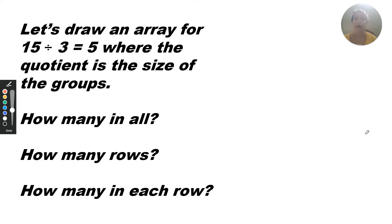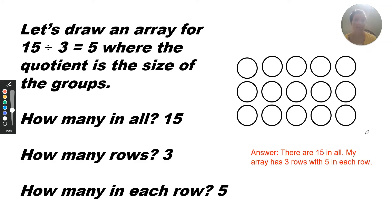Let's draw an array for 15 divided by three equals five, where the quotient is the size of the groups. How many in all? 15. How many rows? Three. How many in each row? Five. There are three rows of five. There are 15 in all.